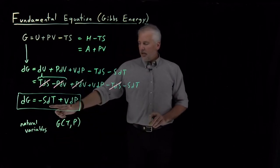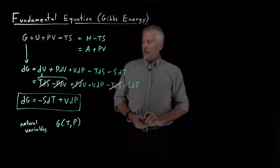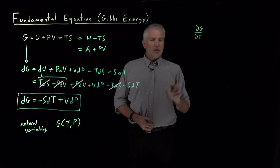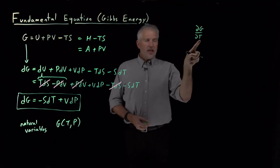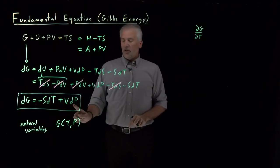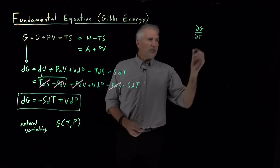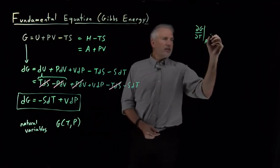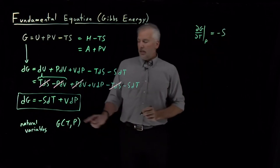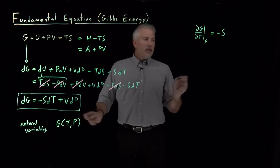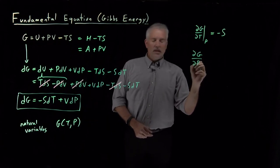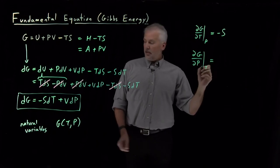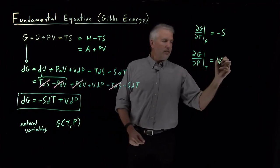The other thing we can see immediately from looking at the fundamental equation is some of the thermodynamic derivatives. If I would like to know how quickly the Gibbs free energy is changing as I change the temperature, DG/DT, as long as I'm holding pressure constant so that this term disappears, DG/DT at constant P is this coefficient, negative S. And likewise, DG/DP at constant temperature is this coefficient, volume.